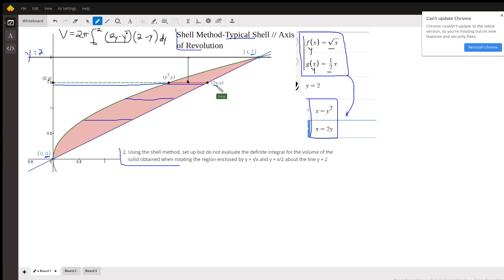Which is y squared, so 2y minus y squared. Another way to think about it is this total distance is 2y. Take away the distance which is y squared.